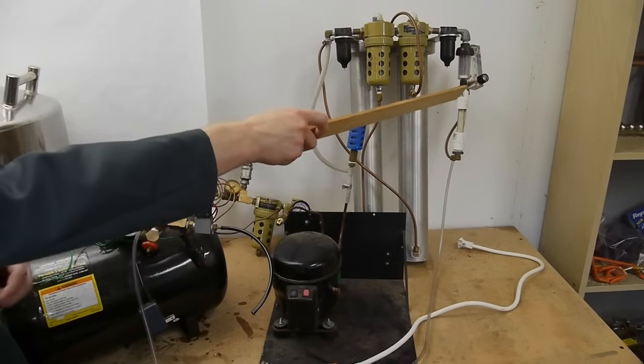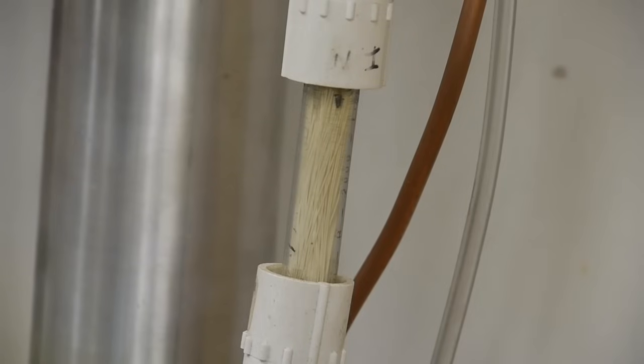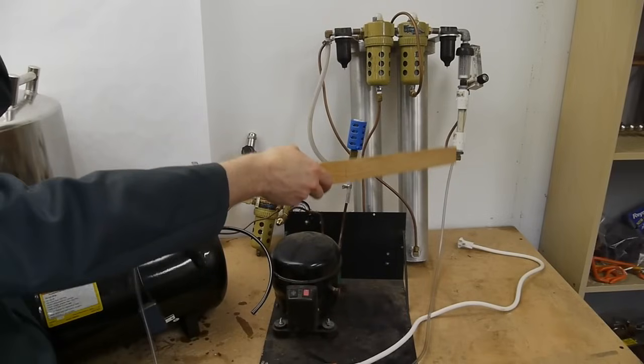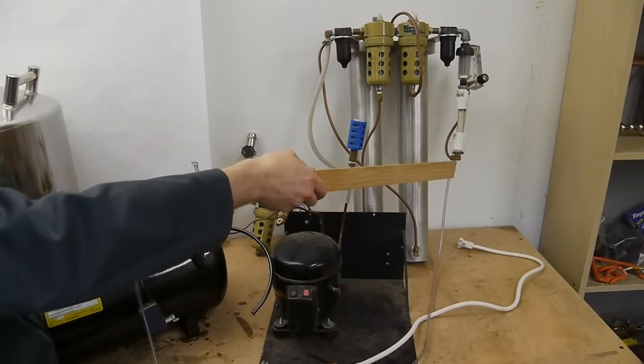The way it works is that 80 percent nitrogen 20 percent oxygen air goes in at high pressure on one side and as the air molecules drift through the tubes the oxygen tends to diffuse through the tube whereas the nitrogen does not. So by the time you get to the other side the gas that's coming out the end of the tubes is nitrogen enriched and the stuff that comes out the side of the tubes is oxygen enriched.